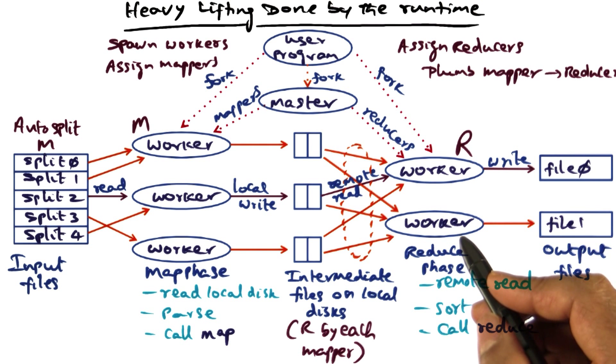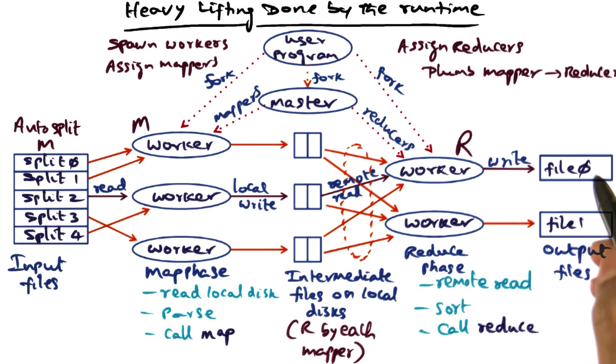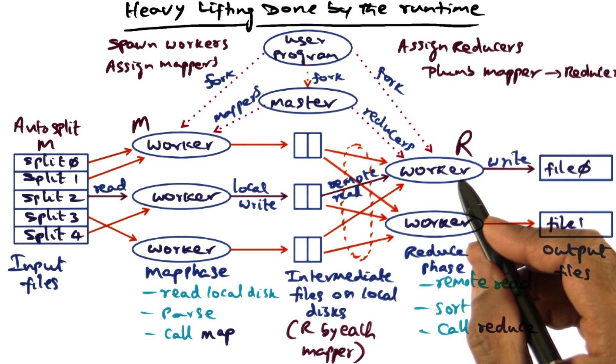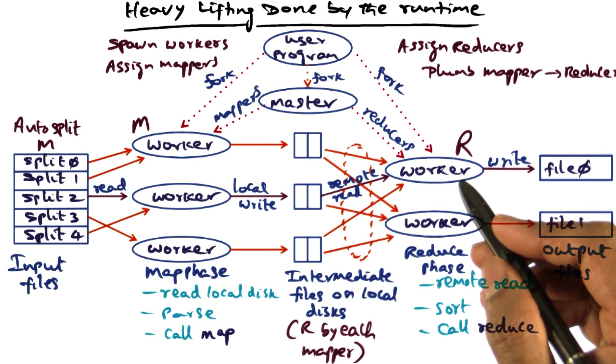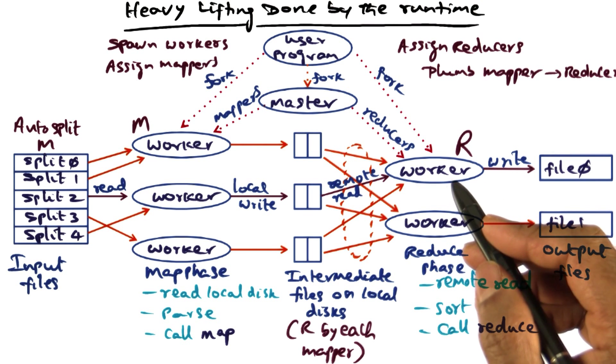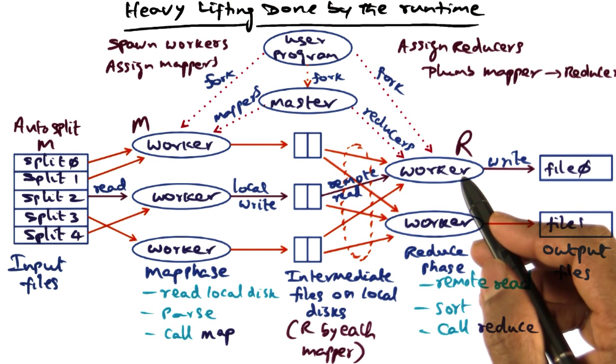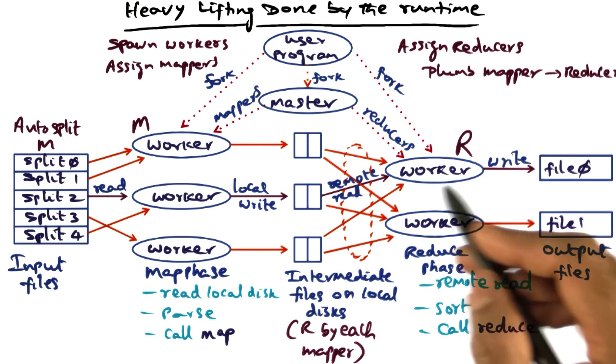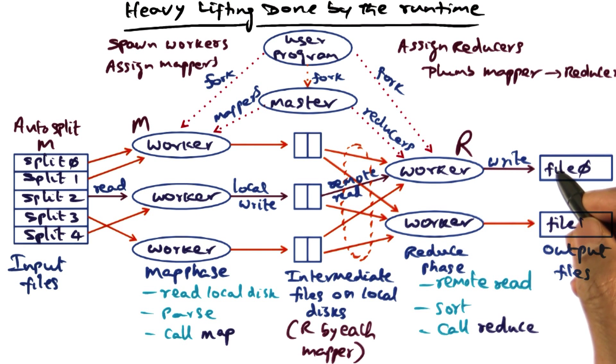Each reduce function will then write to the final output file specific to the partition that it is dealing with. So if you think about the original example that we started with, if let's say this guy is accumulating all the instances of the name Kishore, then it will write the output file that says, I found so many instances of the name Kishore in the input corpus of data. And similarly, this guy may be doing it for another name, like Drew or Arun and so on.